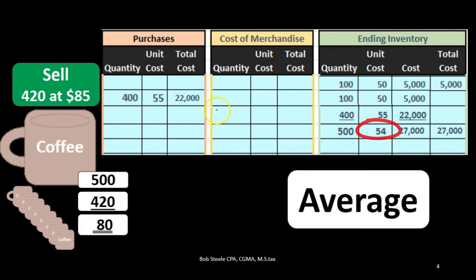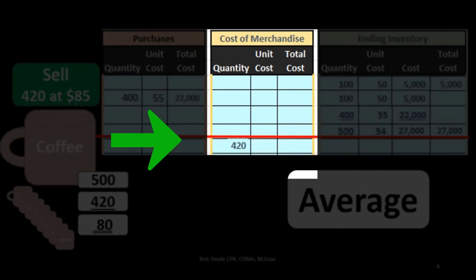Therefore, if we sold some units, we're selling 420 at 85. That's the sales price, not the cost. What will be the cost? The cost will, of course, be the $54.